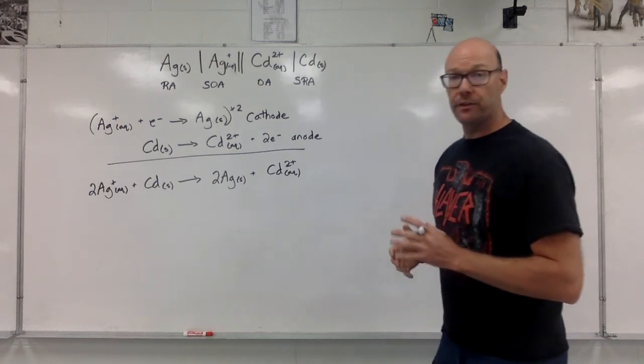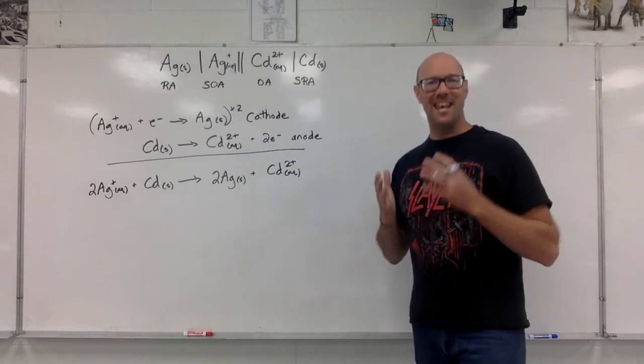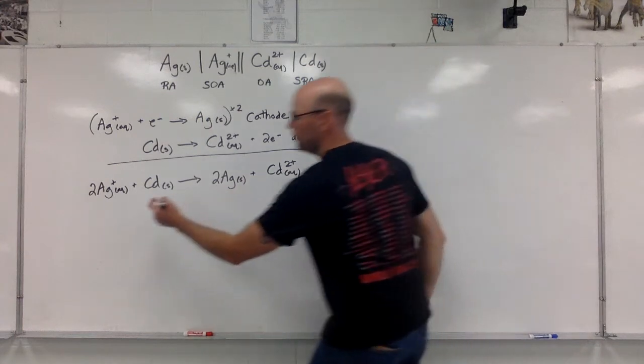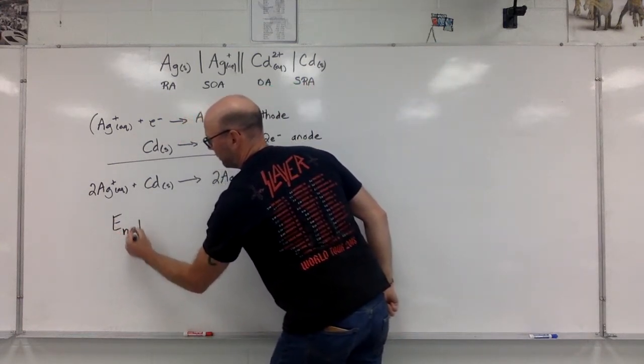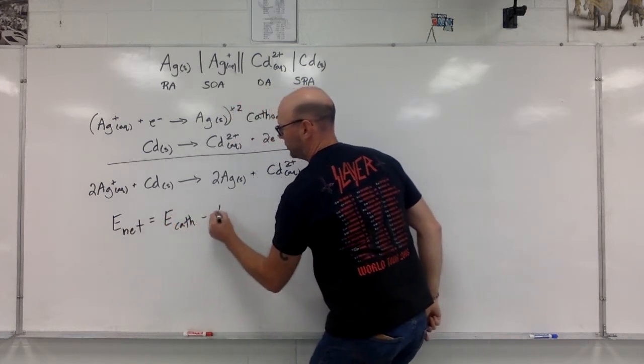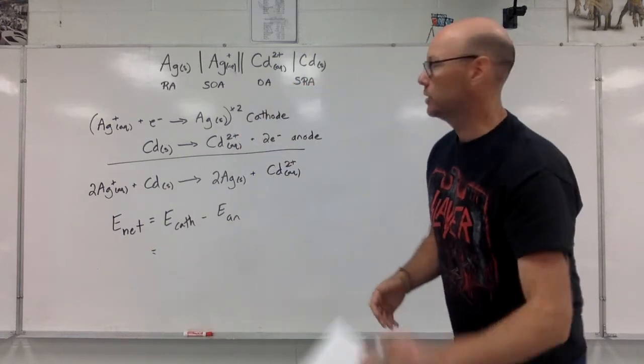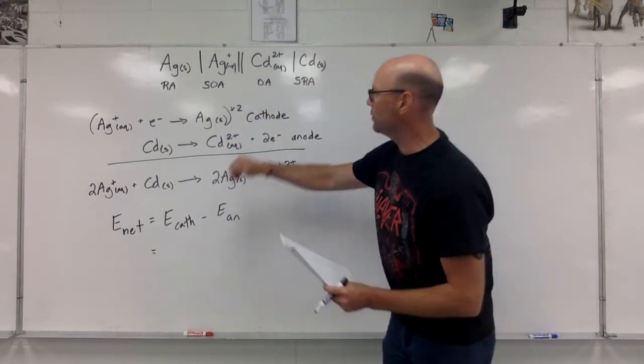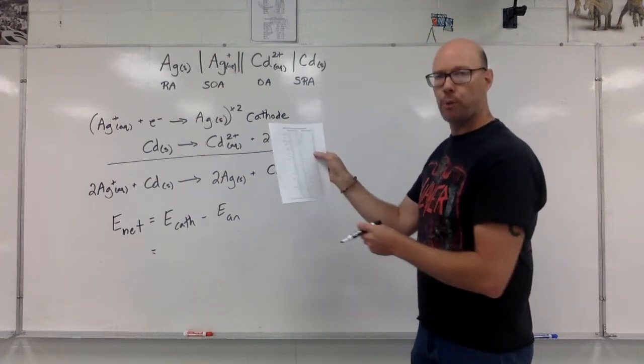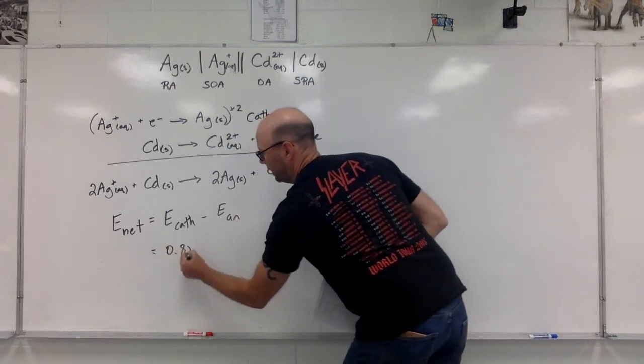The final thing that we will do for this example is to calculate the voltage. What's the net cell potential of this voltaic cell? It's the E net that equals the cathode minus the anode. I'm just going to the data booklet to look up these numbers. The cathode was the silver. The silver line in the data booklet is at positive 0.80, 0.80 volts.